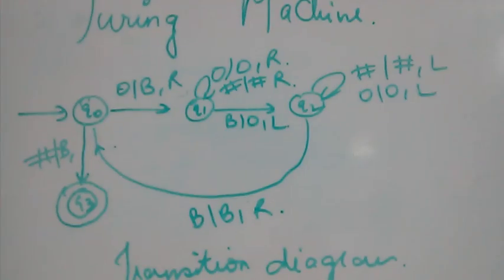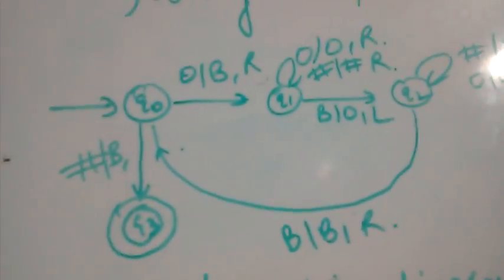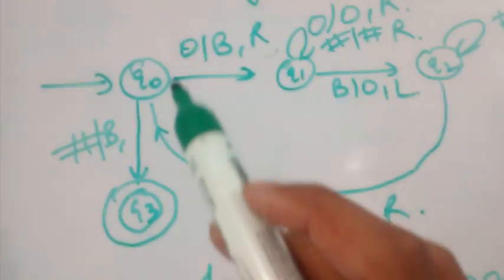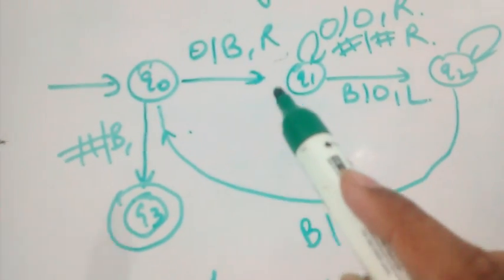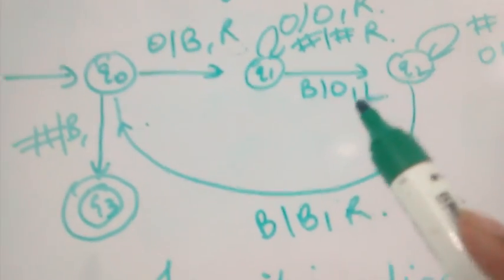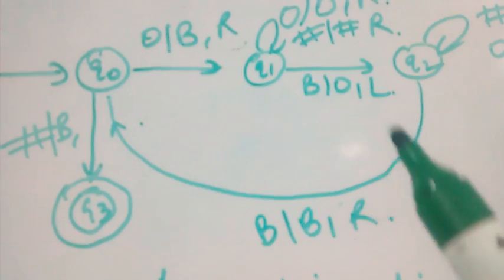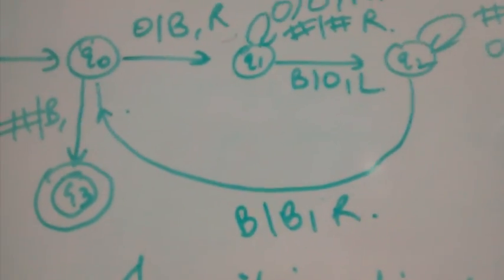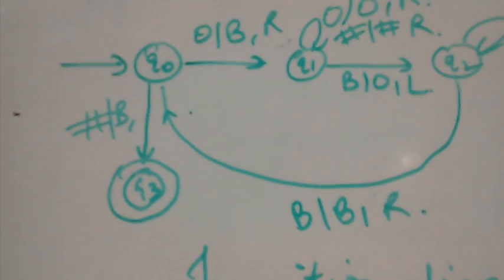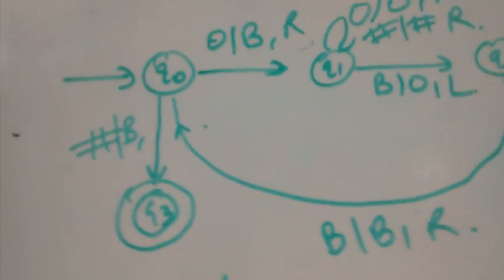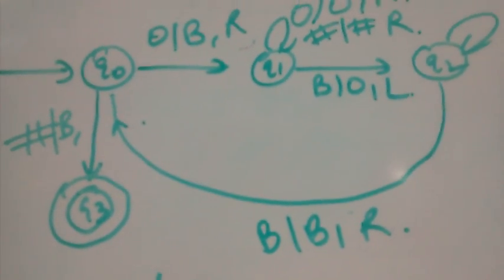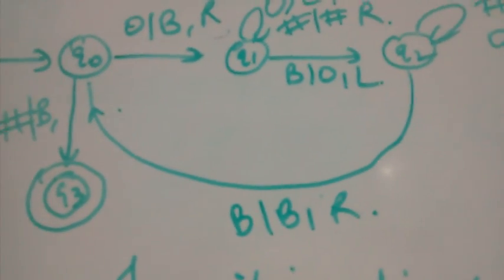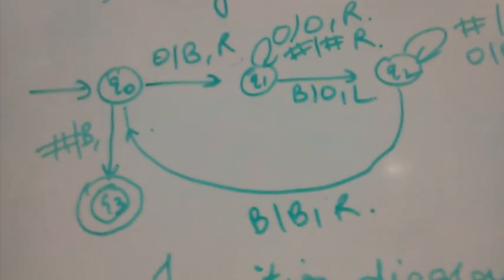Now I'm going to show you the transition diagram. We start by replacing the initial zero with blank and moving right. We skip over the zeros and hash, and at the rightmost end we replace the blank with zero and move left. Then we skip over hash and zeros coming back, reach the leftmost zero, and replace that zero with blank. In this way we copy all the left-side zeros to the right.